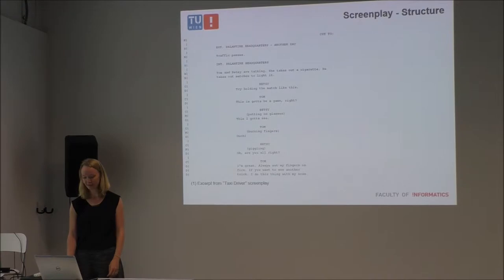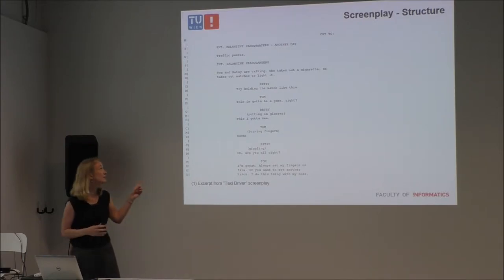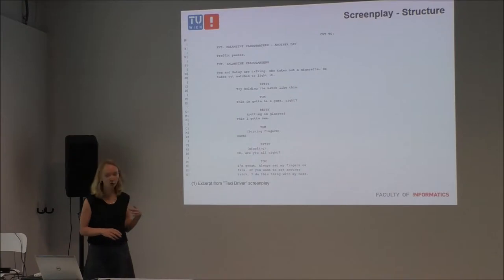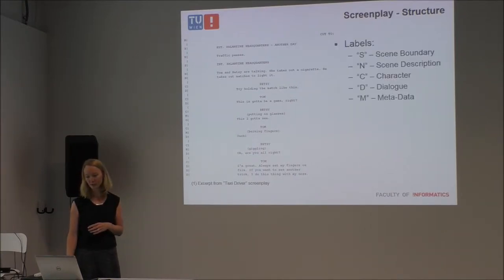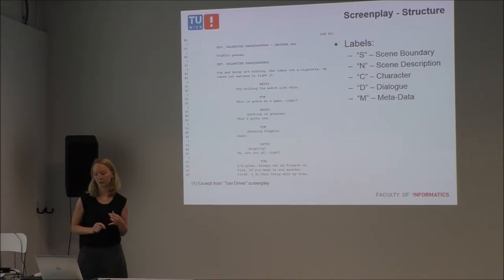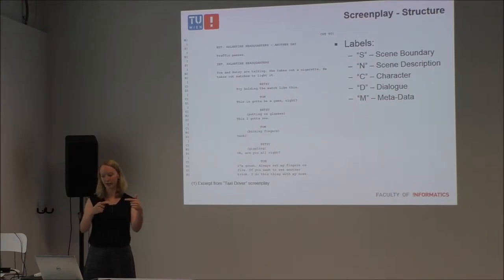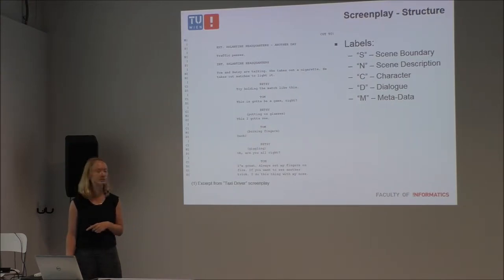For screenplays, before we can start analyzing T1 and T2, we have to preprocess the screenplay. A screenplay is a very well-formatted document with five types of lines, and the parsing step assigns each line to one of these labels: a scene boundary line marking the beginning of a scene, scene description providing more context, C lines for the character name, dialogue lines, and two other types of data lines not very relevant for the Bechdel test.